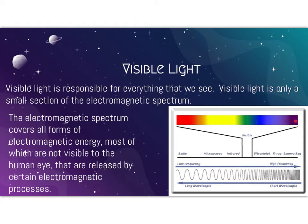Each one of these wavelengths represents a different color on the spectrum. The electromagnetic spectrum covers all forms of electromagnetic energy, most of which are not visible to the human eye, and that are released by electromagnetic processes.